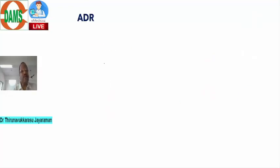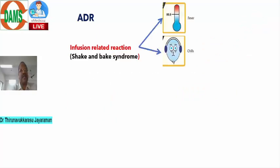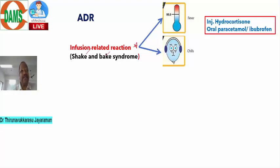Amphotericin B may cause fever, chills, and rigors during infusion — this is called infusion-related reaction, also known as shake and bake syndrome. This reaction can be minimized by prior injection of steroids like hydrocortisone, giving paracetamol or an NSAID to control fever and chills, or starting antihistamines.